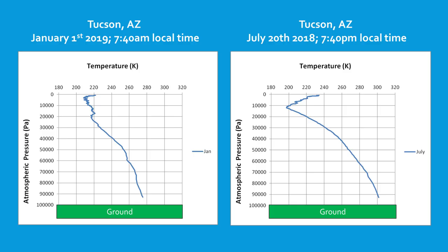Here I've taken weather balloon data from this day last year in Tucson, and one from January 1st this year in Tucson, plotting temperature versus height or pressure as you go up. The green section at the bottom represents the ground. The top scale is in degrees Kelvin — zero degrees Celsius is 273K. The Tucson summer one shows a temperature of about 310K, roughly 40°C or about 104°F. I've picked one January and one July measurement, one in the evening and one in the morning, to illustrate seasonal and diurnal differences.